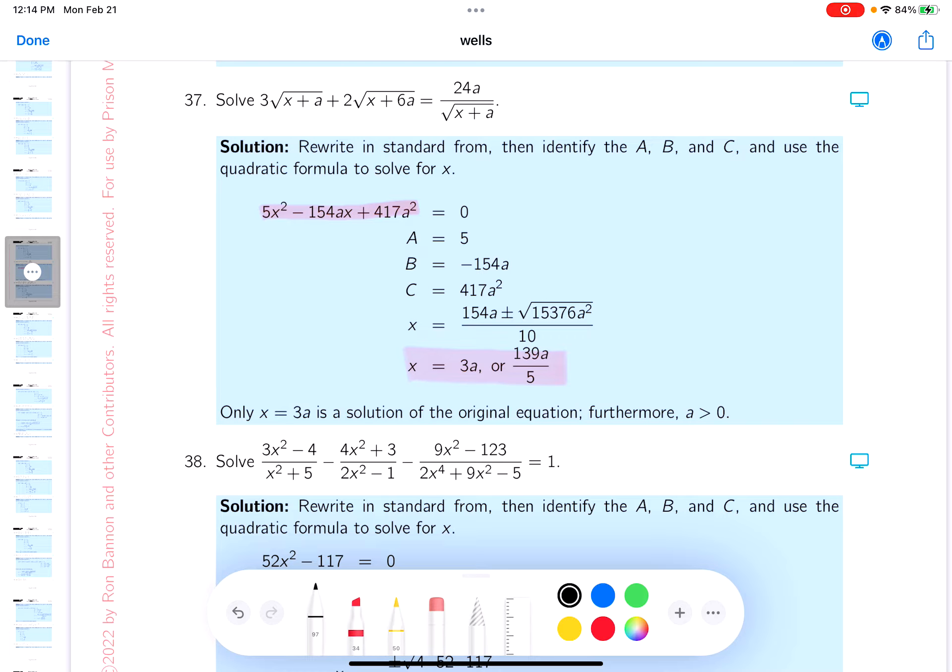If you did that, you would get, let me write this down for you: 3x plus a plus 2 times the root of x plus a times the root of x plus 6a equals 24a.